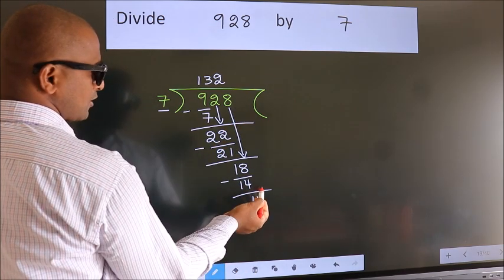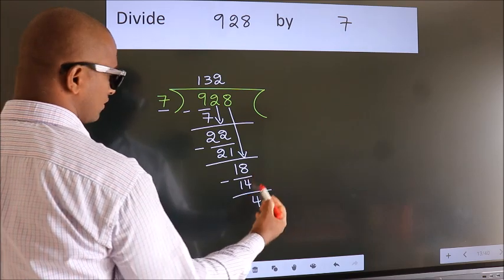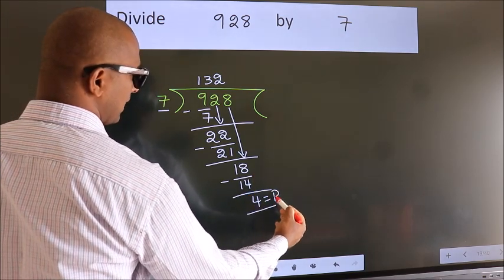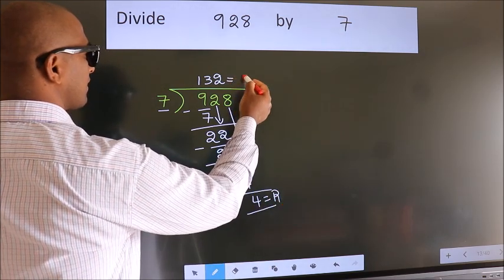No more numbers to bring it down. So we stop here. This is our remainder. This is our quotient.